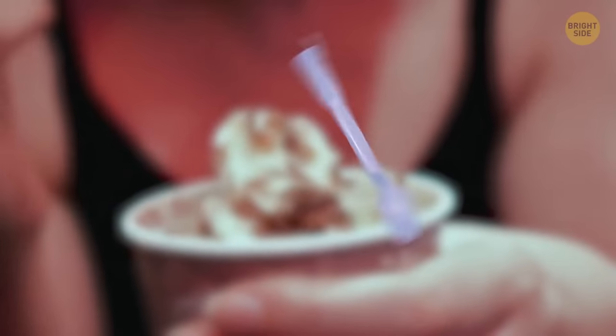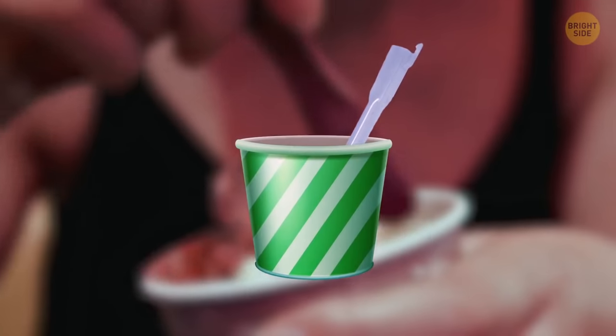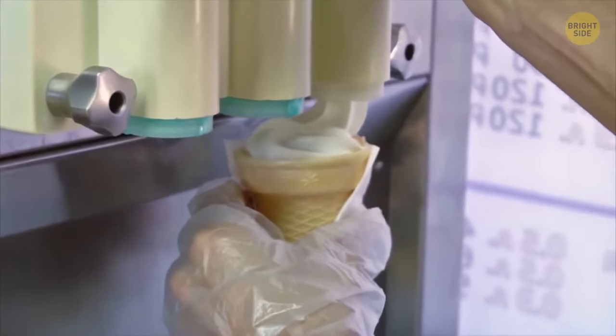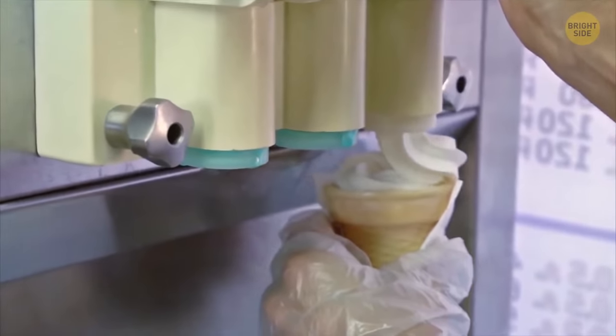The square-shaped spoon that goes with a McFlurry helps to mix the ice cream toppings through the dessert. The spoon hooks directly to a machine and spins around.